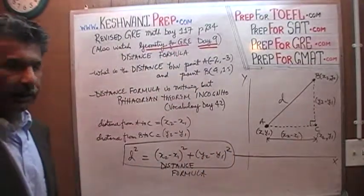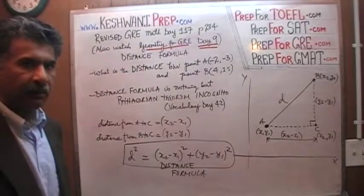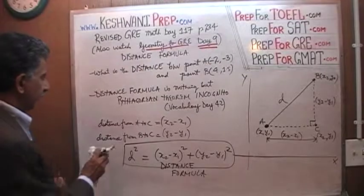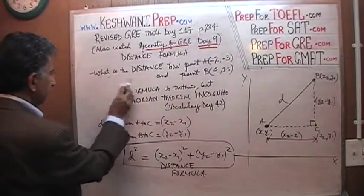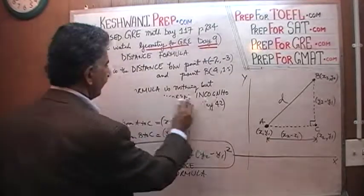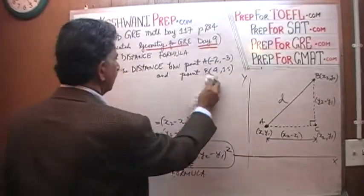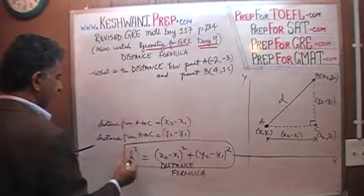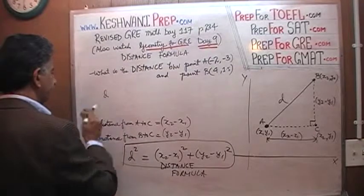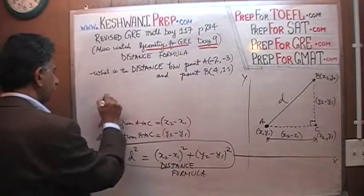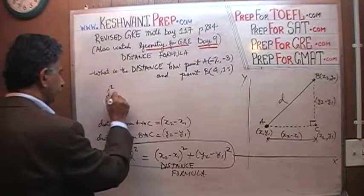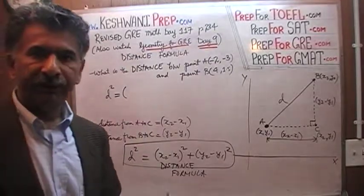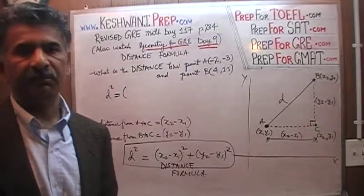We're going to apply this Pythagorean theorem — the so-called distance formula — to figure out the answer. Point A is negative 2, negative 3; point B is 4 and 1.5. Let's find the distance D squared. Now, does it matter which one you call x2 and which you call x1? The answer is it doesn't matter.